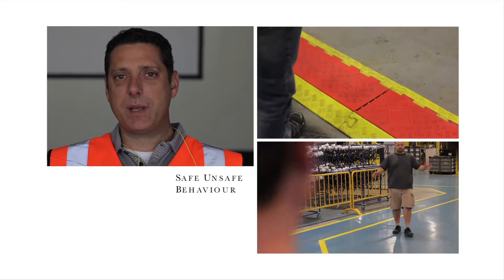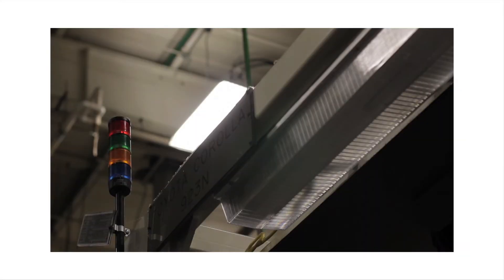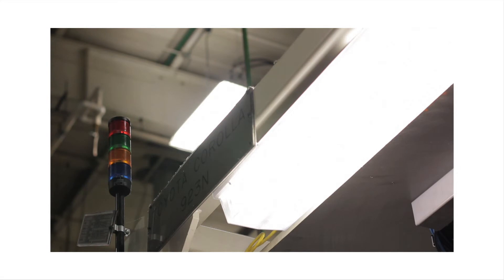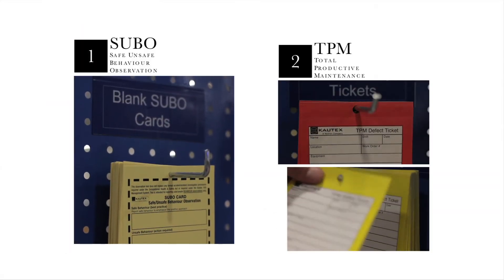So there you have it. The next time you see safe or unsafe behavior or you see an unsafe condition, you can use the SUBO or TPM card systems. Let's work together to create a zero-injury culture and to keep everybody safe. Thank you.